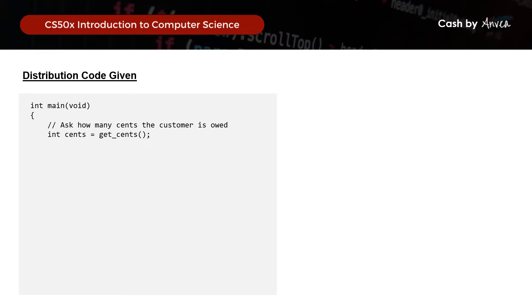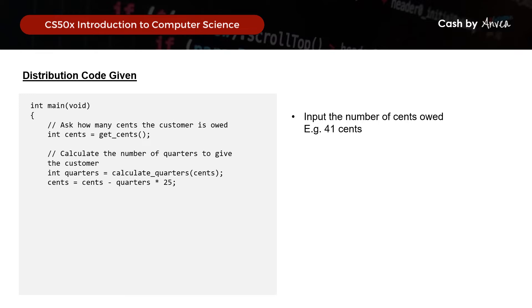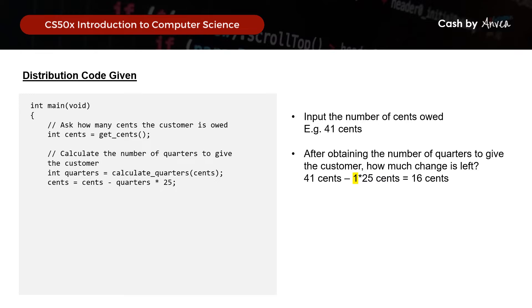We start by asking the customer how many cents are owed. This is done by declaring an integer called cents and calling get_cents — the function we need to write — to prompt the user to key in how much is owed. Using 41 cents as our example, we then declare an integer called quarters, and calculate_quarters determines how many quarters to give. After issuing quarters, the balance is: 41 cents minus 1 quarter times 25 cents equals 16 cents remaining.